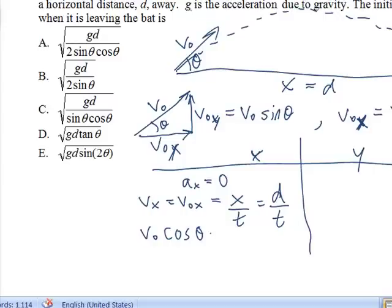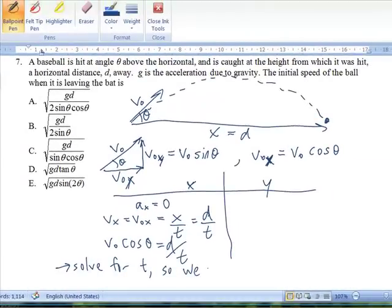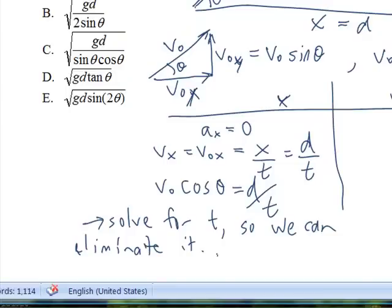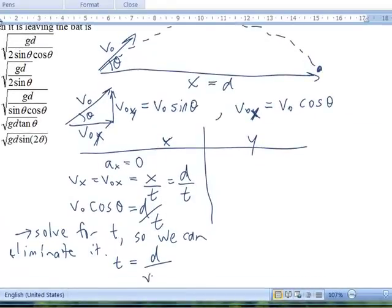V sub 0 cos theta is equal to d over t. We'll want to solve for t so we can eliminate it. t is equal to d over v sub 0 cos theta.